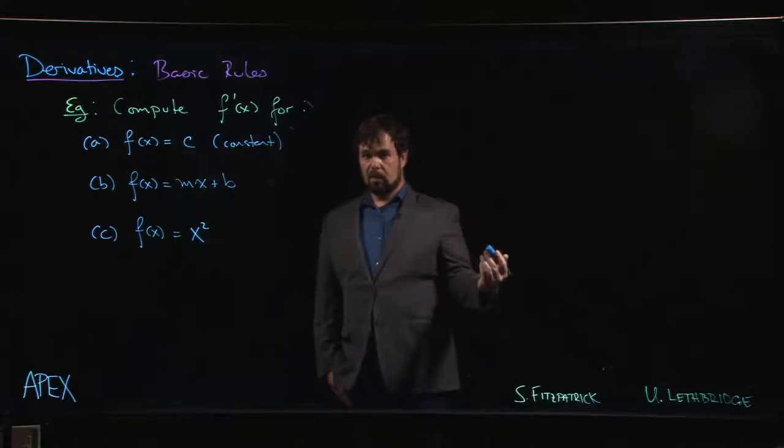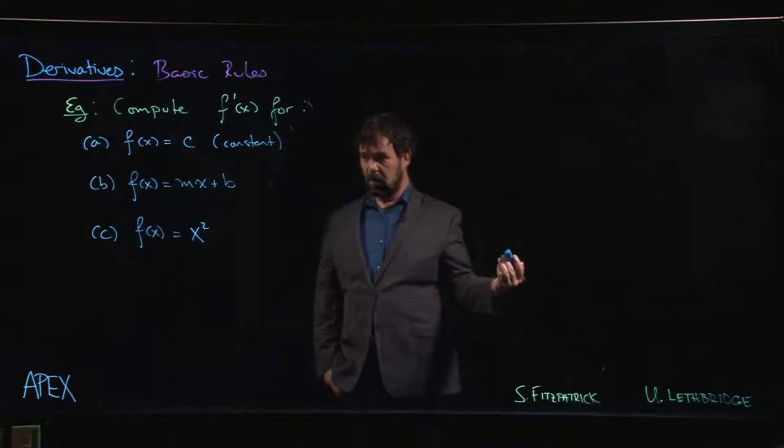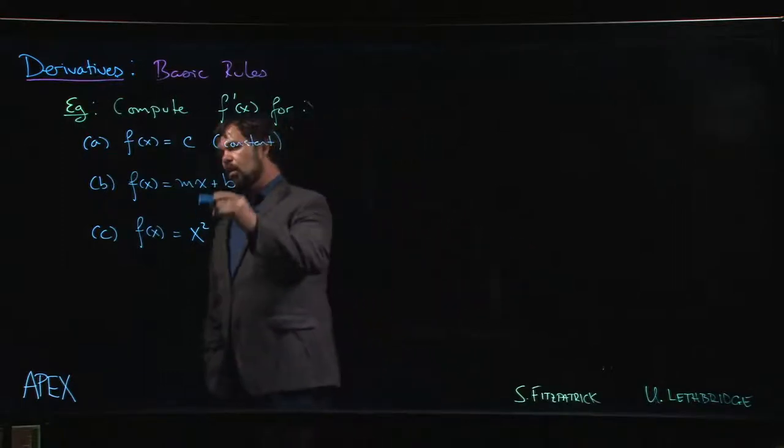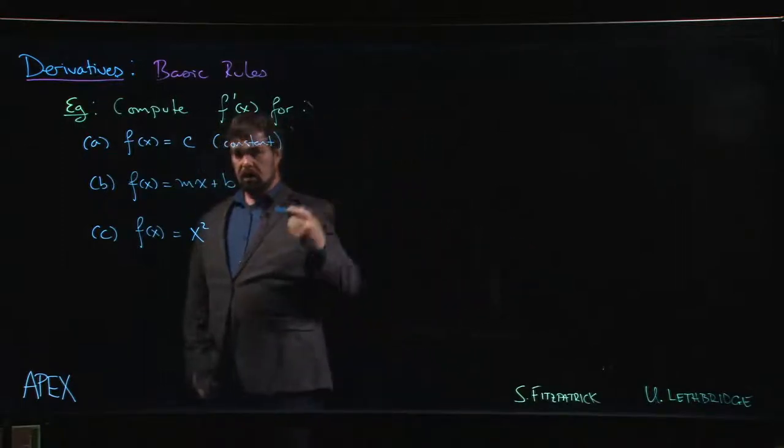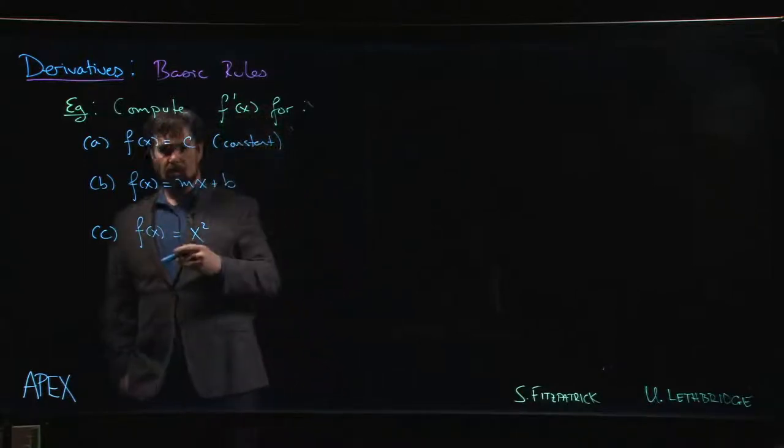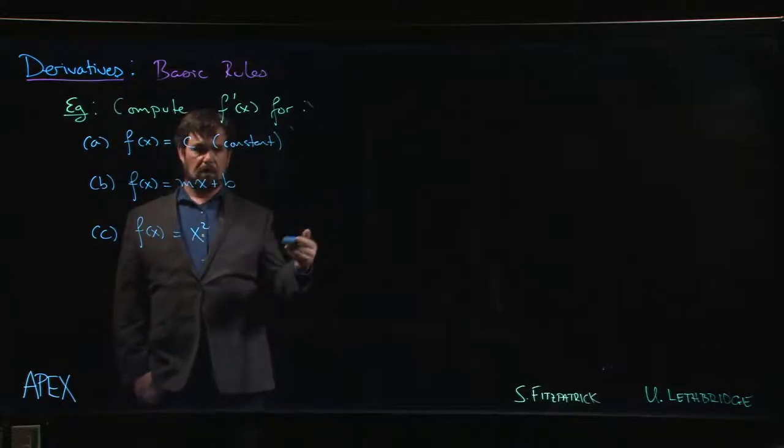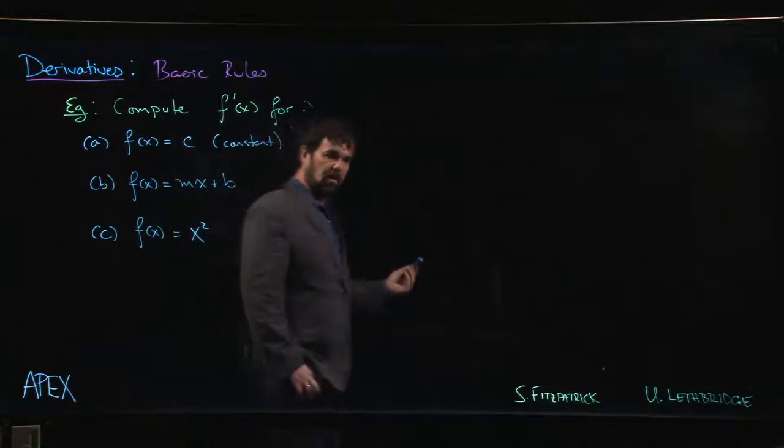If we remember this interpretation of the derivative, we understand the derivative as slope—slope of a tangent line. Well, these functions here are already linear functions, they're already lines. Here's a horizontal line, here's a line with some slope. The thing that distinguishes lines from all other curves is that they have the exact same tangent line at every point, namely the original line.